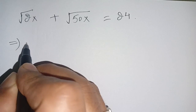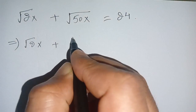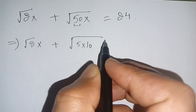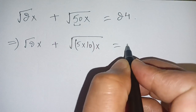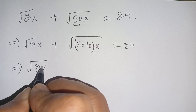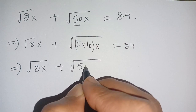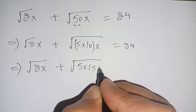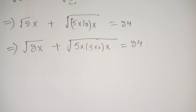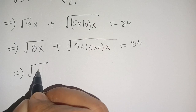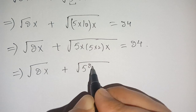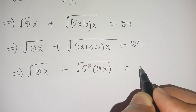We write this as square root of 2x, and square root of 50 can be written as a factor of 5 times 10, so it becomes square root of 50x. Now on the next step, we can write square root of 5 times 10 as square root of 5 times 2 times x. We then write this as square root of 5 times 5, which becomes 5 squared times 2x.